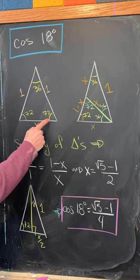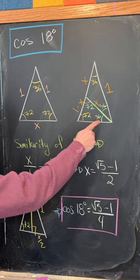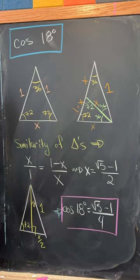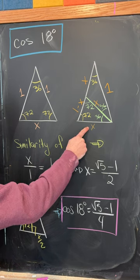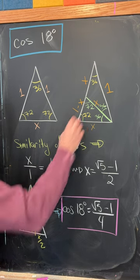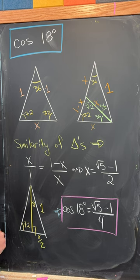Start by bisecting this 72 degree angle to give us two 36 degree angles. That makes this a 72 degree angle. Then this length x is the same as this length x because we've got a small isosceles triangle here. But we've got a larger isosceles triangle at the top, meaning that this length right here is also x.